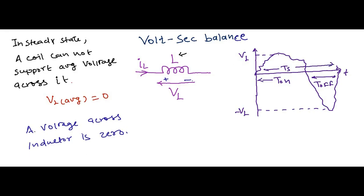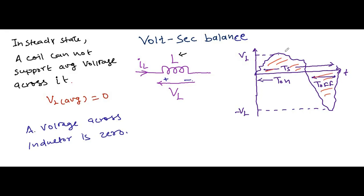If you apply the area under the curve from 0 to the total time period T, you get the integral of VL with respect to dt equals zero. Here VL stands for volts and dt stands for seconds — that is why it is called the volt-second balance.